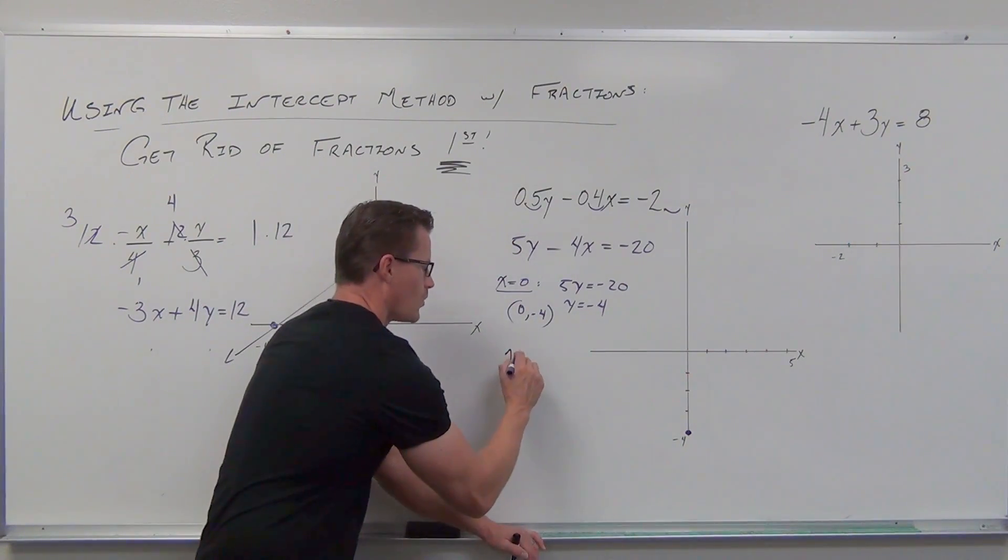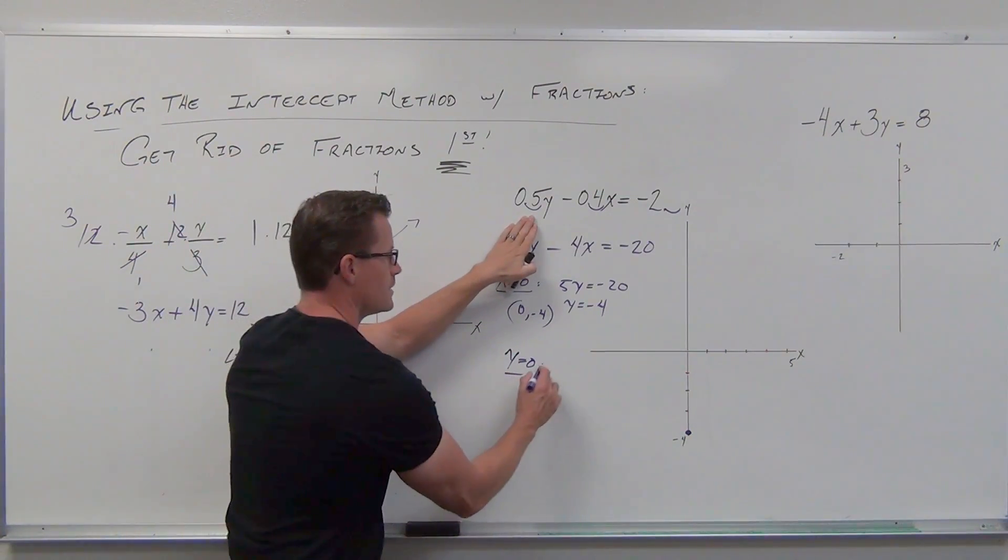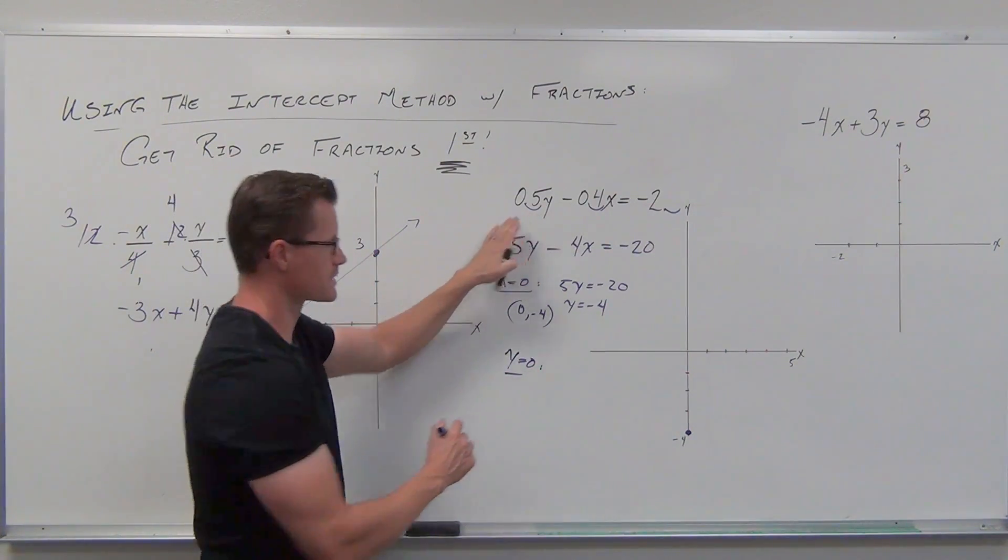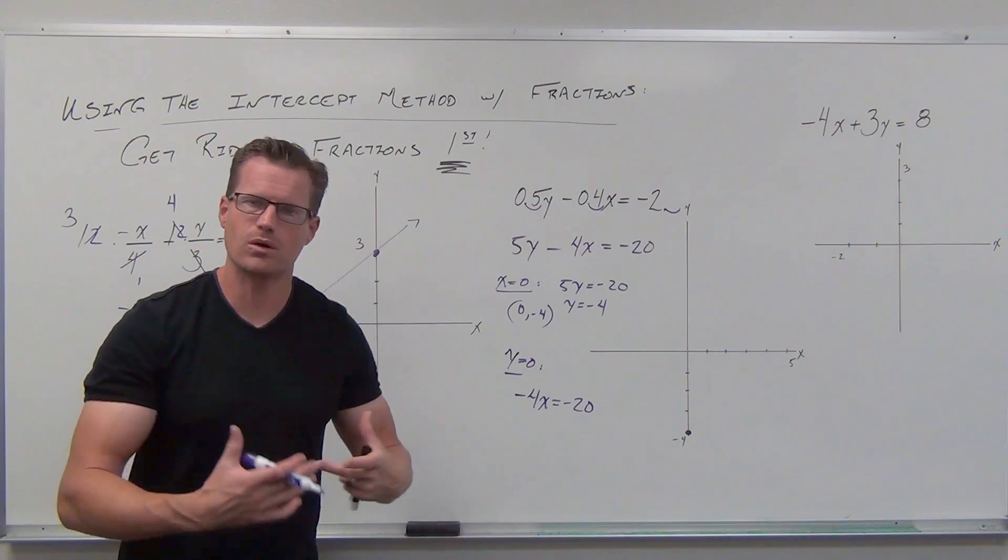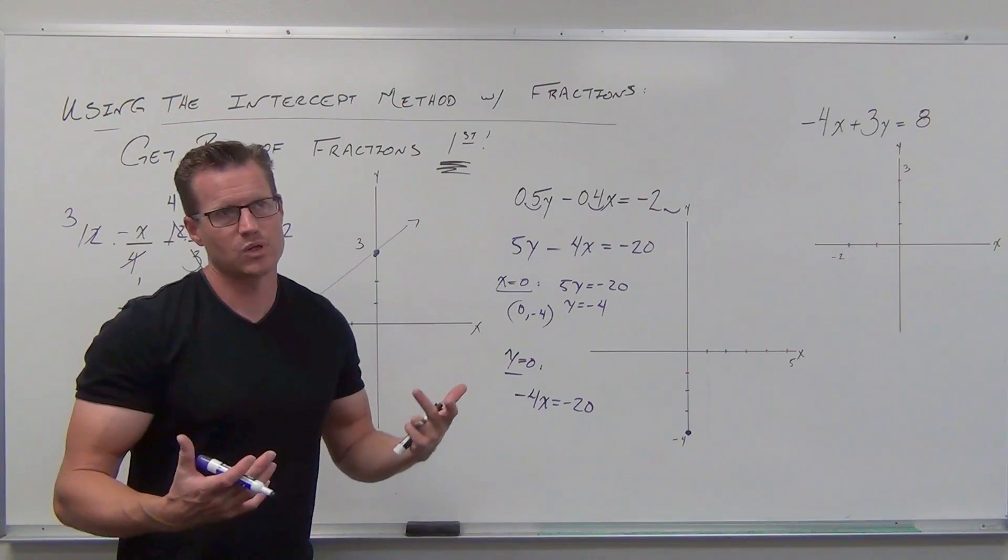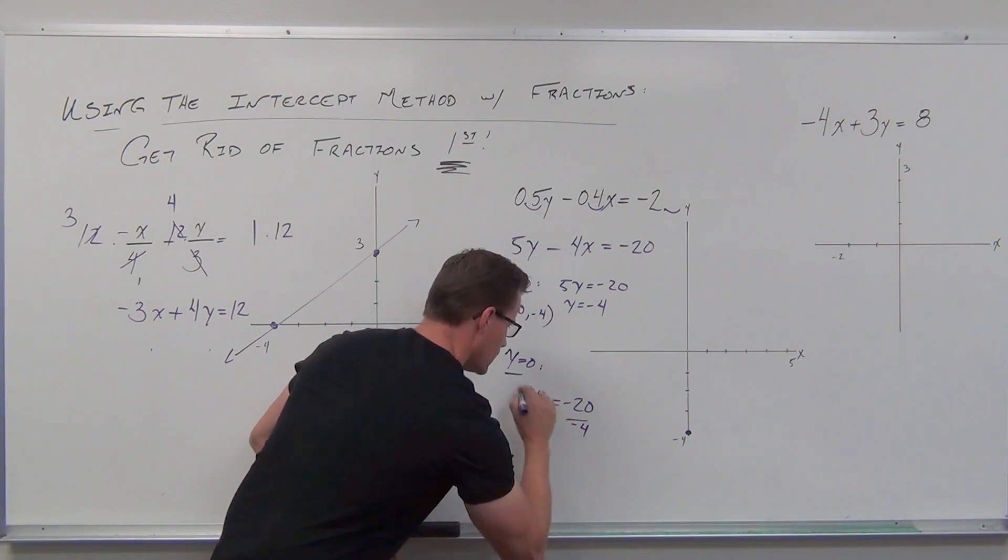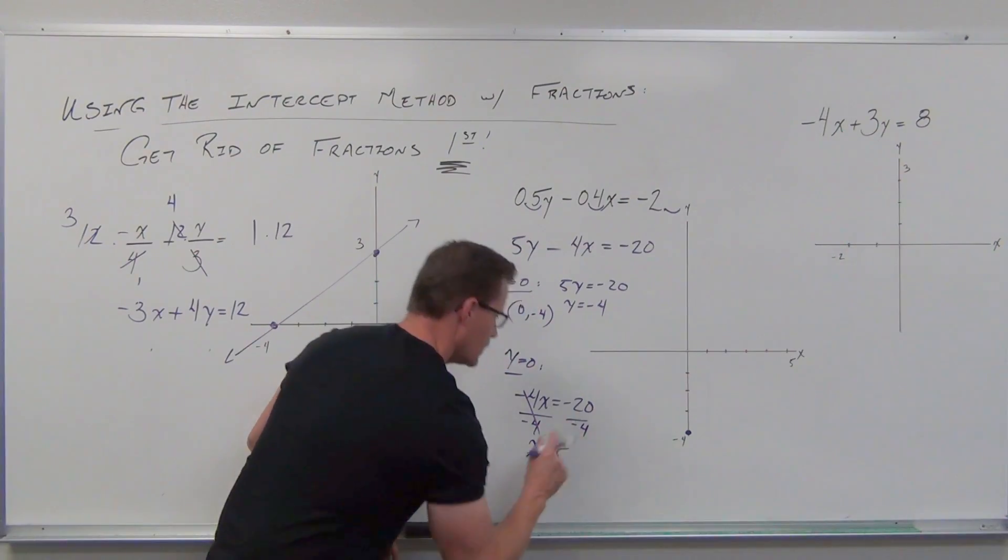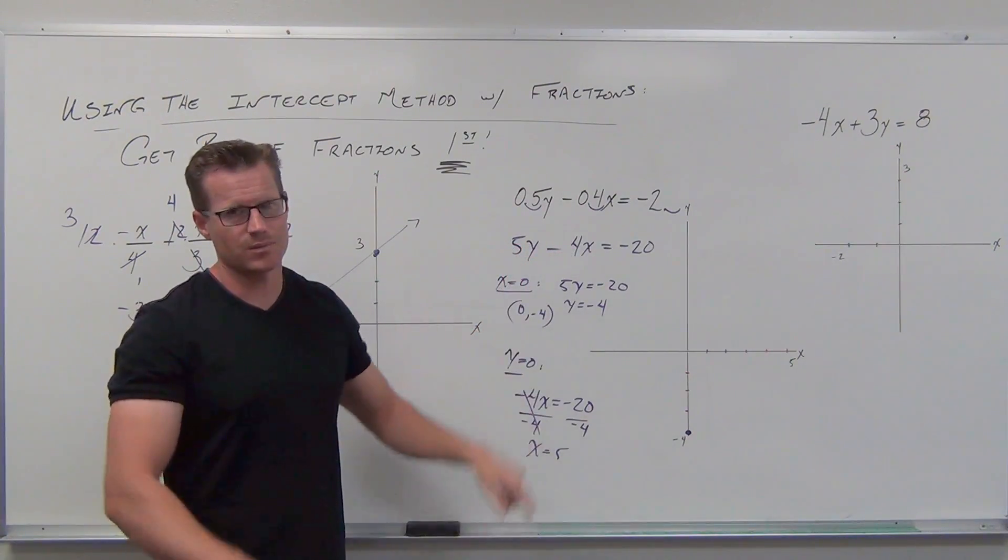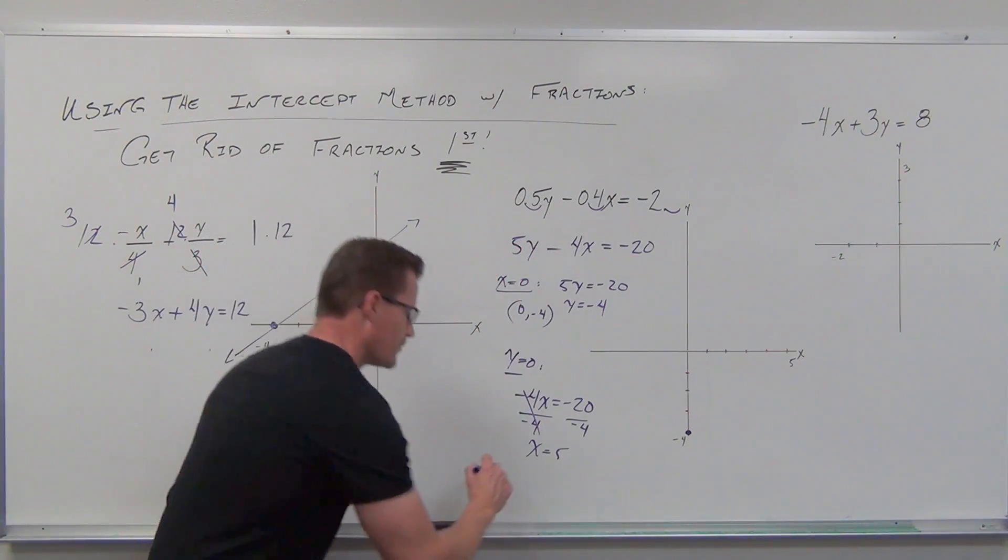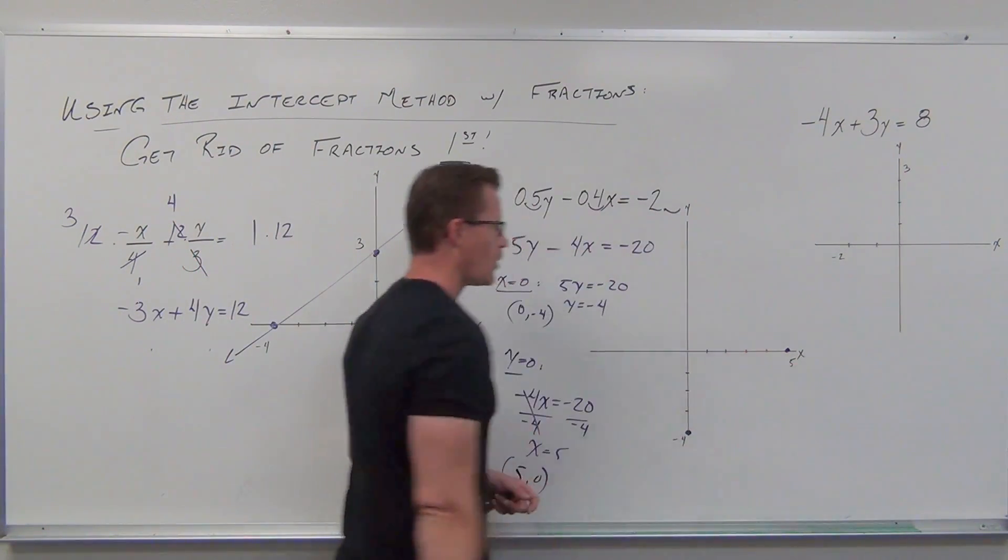Do the same thing with y equals zero. If y equals zero, you're setting this equal to zero. You need to be getting negative 4x. Not 4x. Negative 4x equals negative 20. Watch your signs. Man, almost all errors in math, percentage-wise, are sign errors. Most of them. We need to be getting a positive 5 out of that. Could you get there from here? Sure. Is it easier looking like that? For a lot of people, yeah. So we'd have 5, 0 as your x-intercept. That's over here. Now we've shown all work.